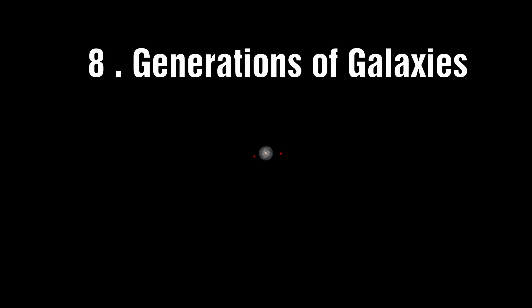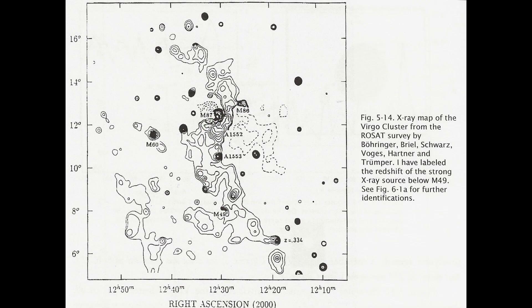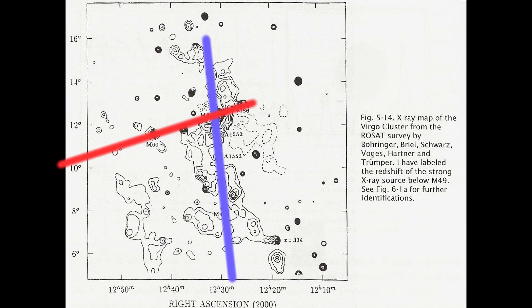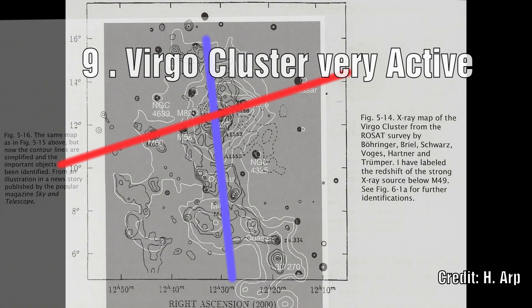Number 8: Successive generations of galaxies. We see material being ejected along a line and we see this material evolving over time. In the case of M49, we see that further along this line we get M87, which is itself a highly active galaxy. This galaxy then initiates its own process and starts ejecting material on a different line to that which created it, which in turn seeds more quasars and creates its own galaxies.